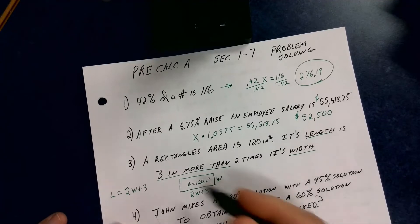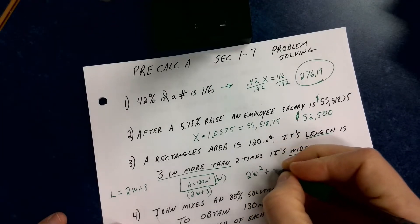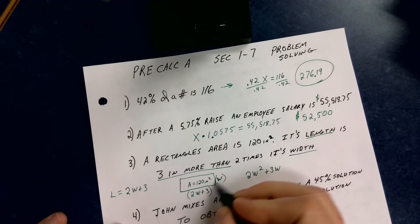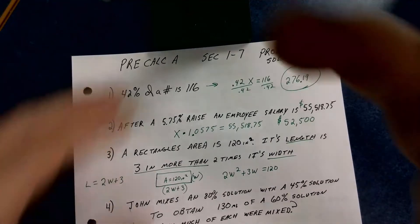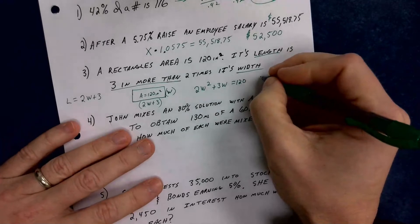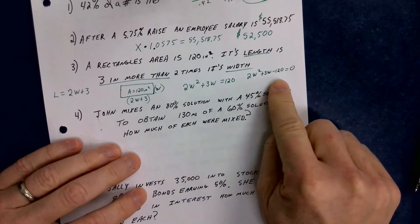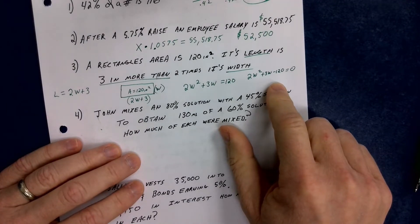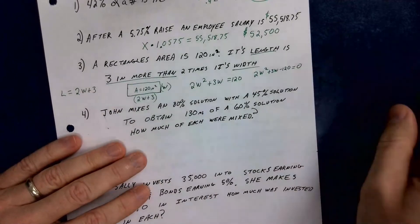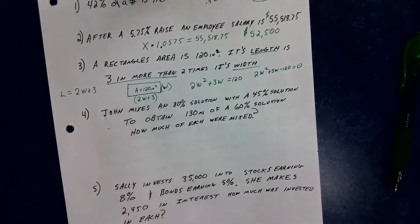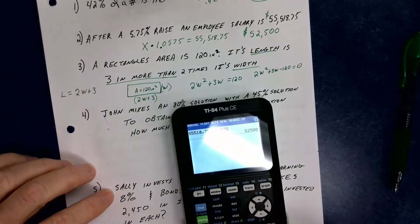I know that length times width equals area. So (2W + 3) × W = 120, giving 2W² + 3W = 120. I have a quadratic equation. Setting it to zero: 2W² + 3W − 120 = 0. I could try to factor this, or do the discriminant check b² − 4ac to see if it factors. But for almost all of our story problems, you're going to be able to use your calculator. The goal is getting the equation, then using tech to work with it.